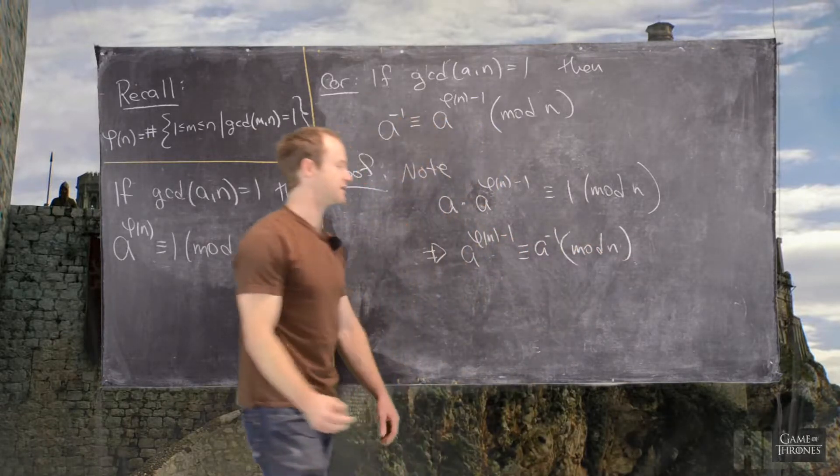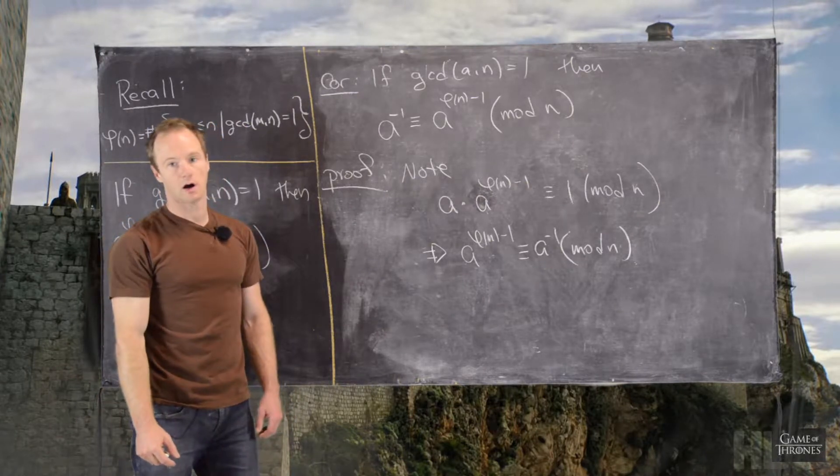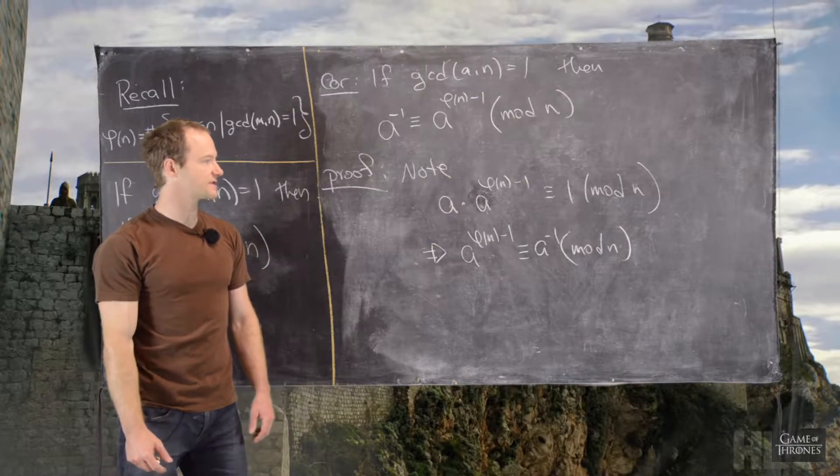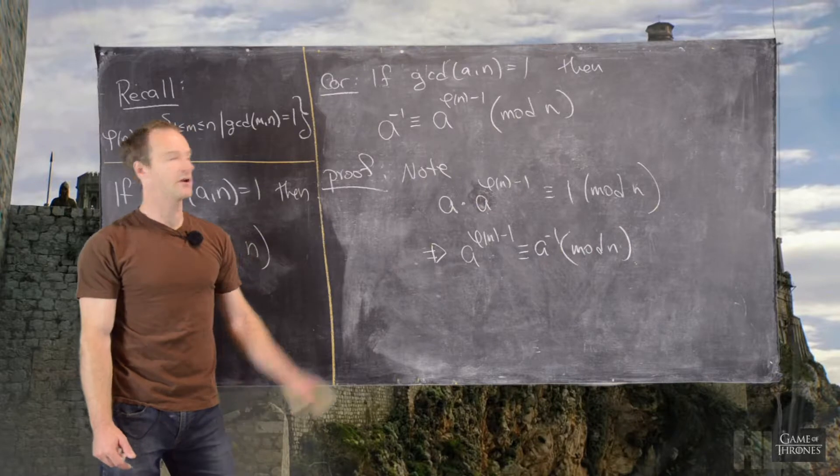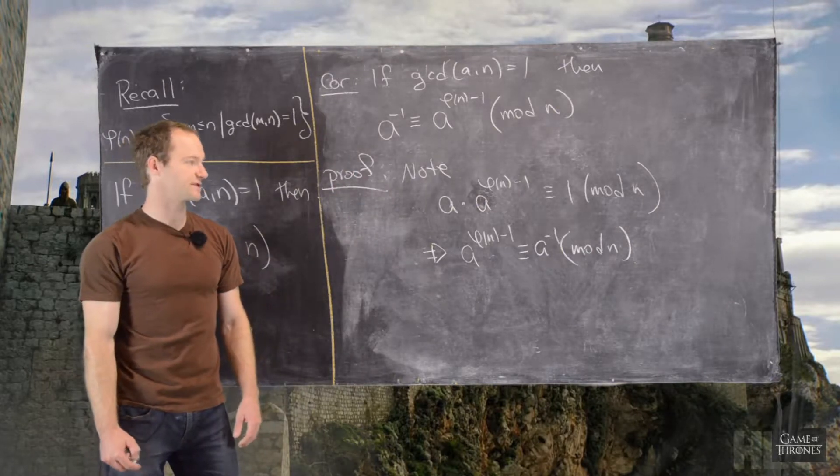Now, there's not really anything to this proof because inverses modulo n are unique because u of n is a group, the group of units, and so here we have what the inverse is. Okay, good. So, I'll erase this board and then we'll look at a simple example of this proposition.